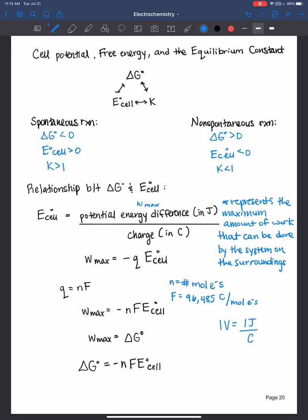And so work max is equal then to negative nFE cell potential. And all we did here was plug in this relationship. This is what work max is defined as, is negative Q cell potential, plugging that in for Q. And we also know from the thermodynamics chapter that Gibbs free energy represents the maximum work that can be done by a reaction. After nature has taken its heat tax, right? We went into depth about that one.